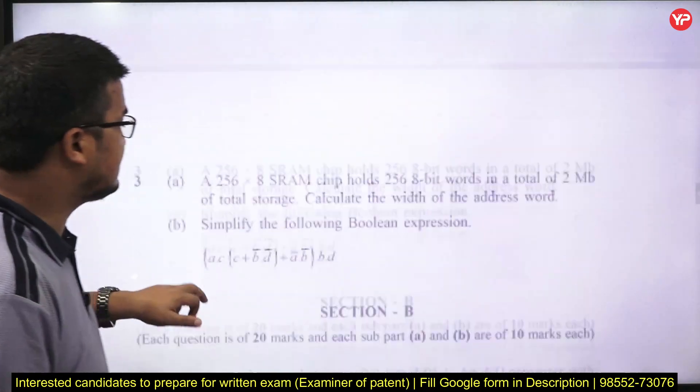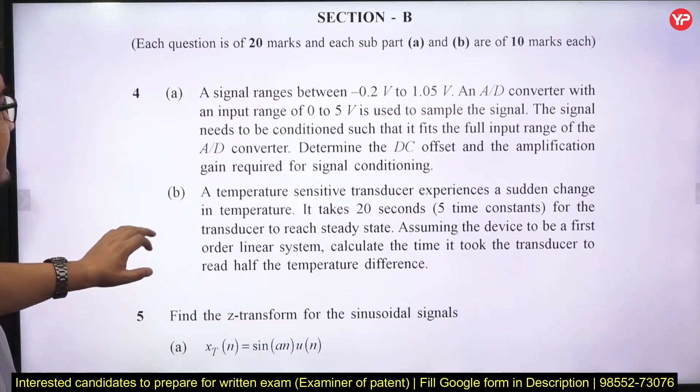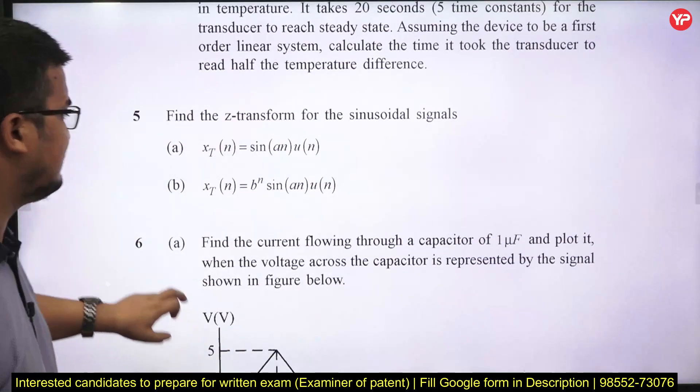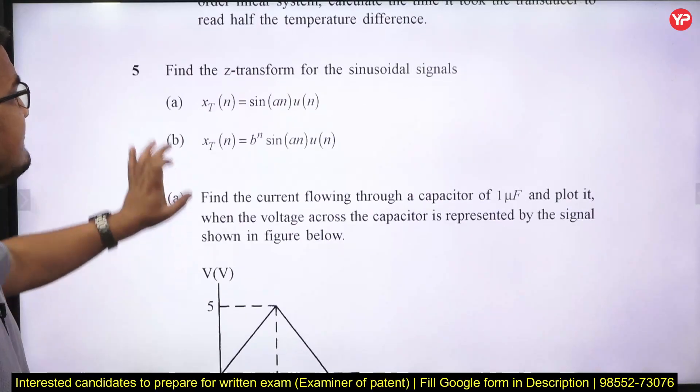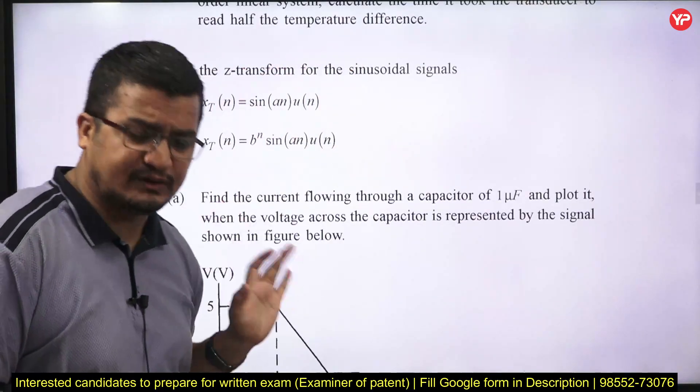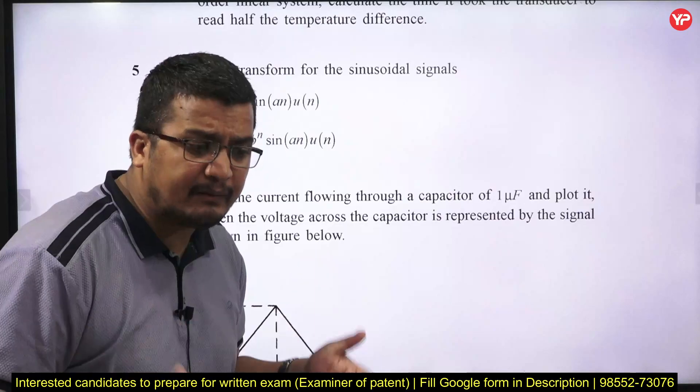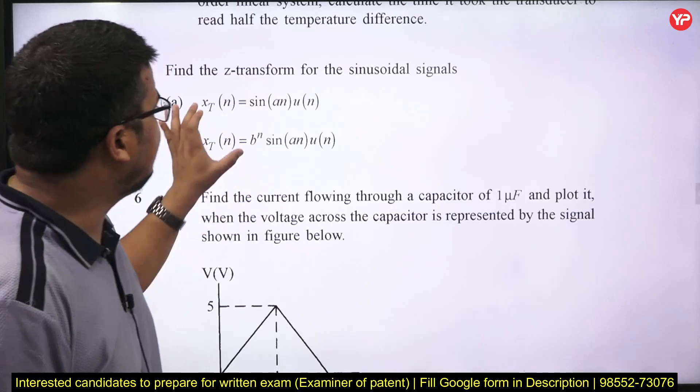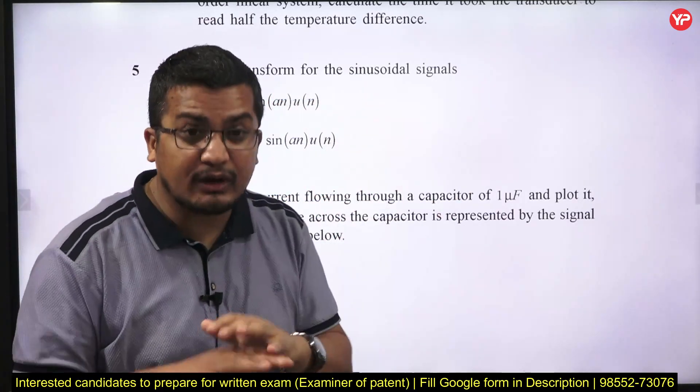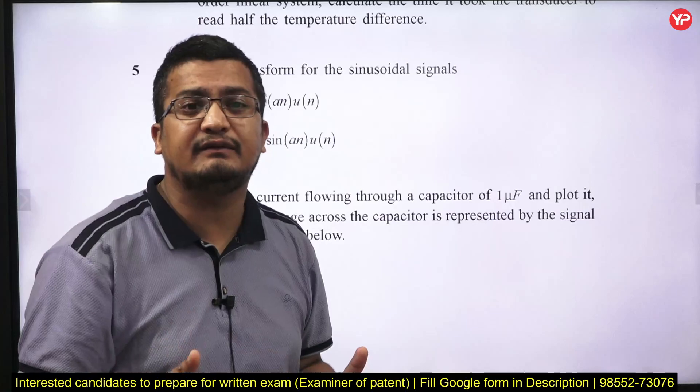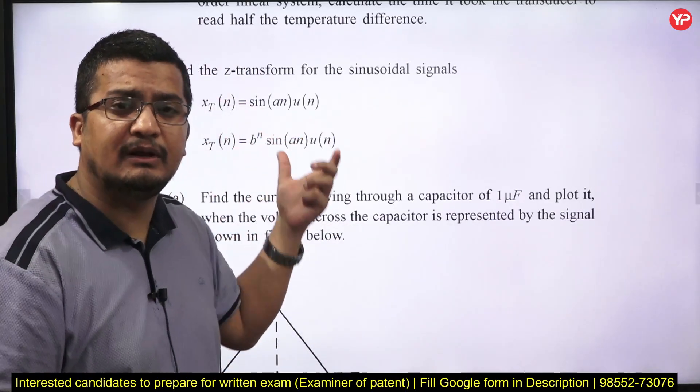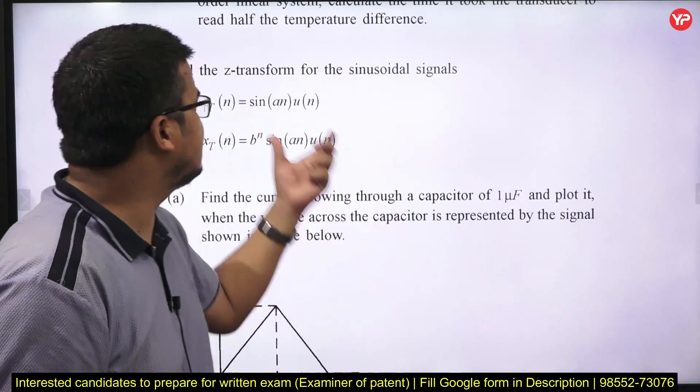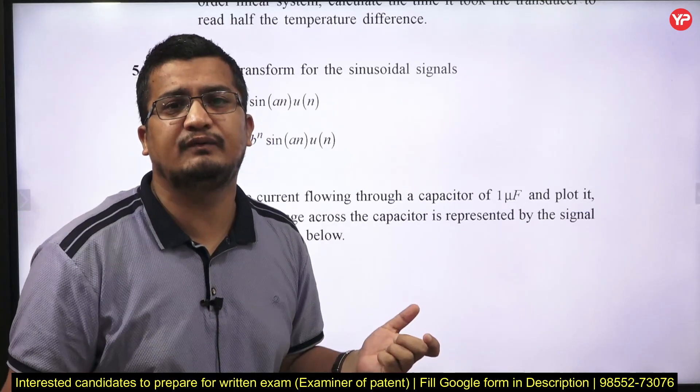You can see there are questions also from, this is question from basically A to D converter again. So you have questions from signal system Z-transform again network theory, very fundamental question. They are simply asking the Z-transform for the sinusoidal signal. If you have prepared for GATE, you have prepared for any competitive exam or even during your subject or bachelor, these are the very basic questions. And you might remember the formula, but you don't need to write the formula only, you need to make the entire derivation. You must know what is the expression for the Z-transform. X of Z is equal to summation n minus infinite infinite x of n z minus 1. Then substitute this value and break down how you can break down it. There are so many ways of doing this.